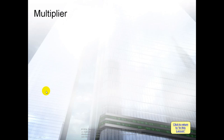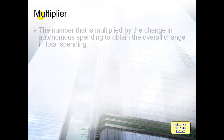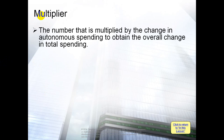A new topic in this chapter is the multiplier — it is a very important topic. The multiplier is the number that is multiplied by the change in autonomous spending to obtain the overall change in total spending. We underline 'autonomous spending.'